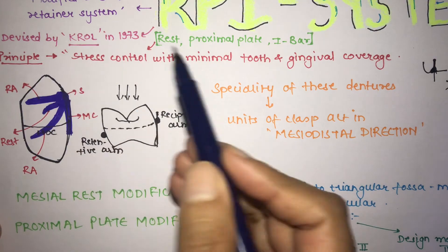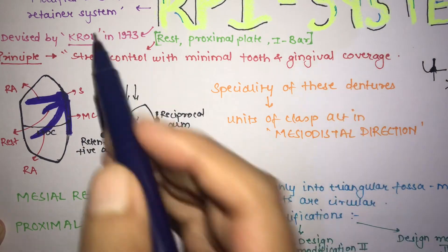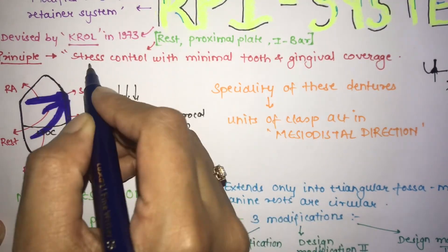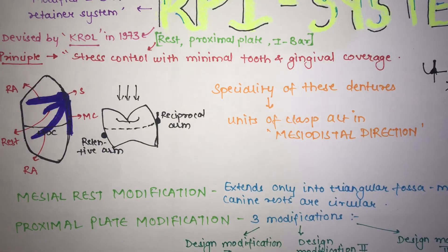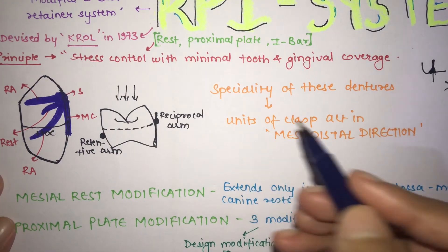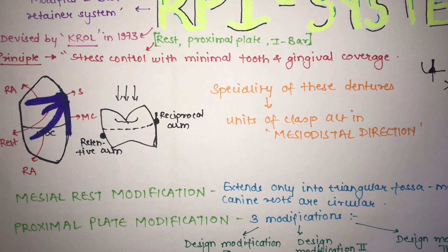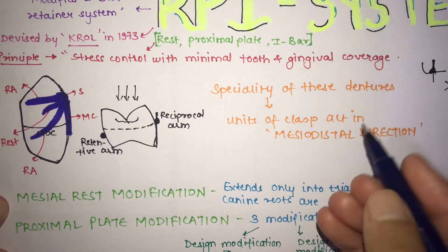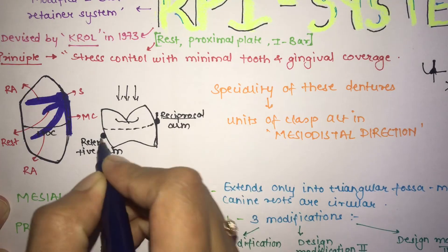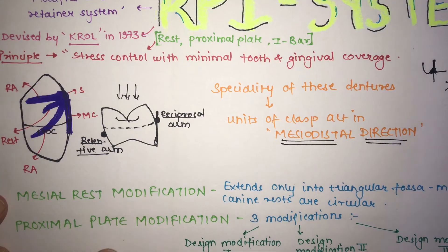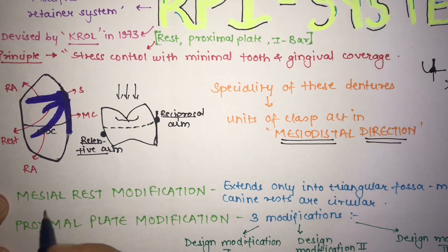The principle of the RPI system, as stated by Crawl, is stress control with minimum tooth and gingival coverage. The speciality of this denture is that the clasp units act in the mesiodistal direction, whereas in conventional dentures the clasps act in the buccolingual direction. In the RPI system, the reciprocal arm and retentive arm act in the mesiodistal direction.